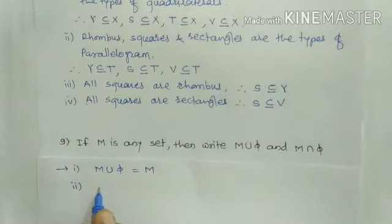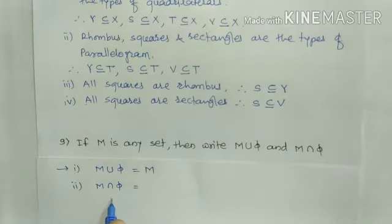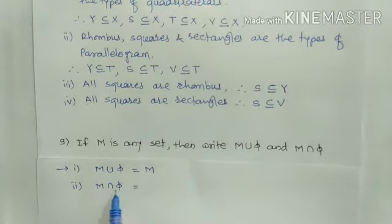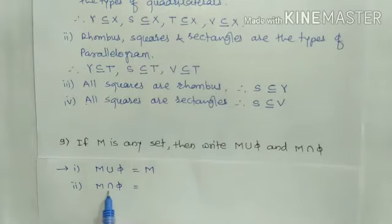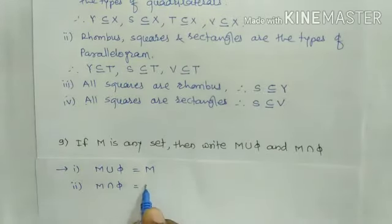Now M intersection phi. The intersection means the set of common elements — it is the set of common elements in sets M and the empty set. But the empty set has not a single element, so there is not a single element which is common in the two sets. Therefore the intersection of M and phi equals phi, the empty set or null set.